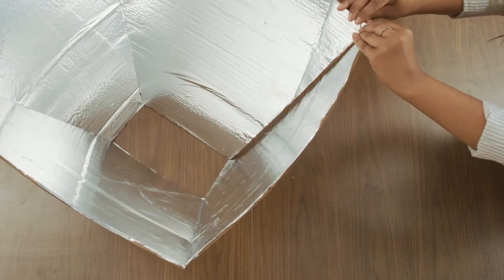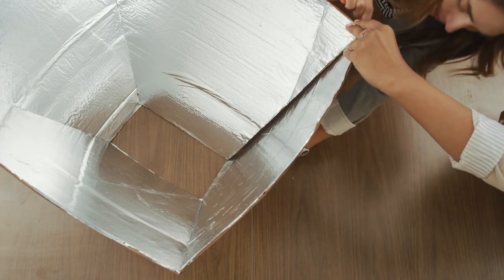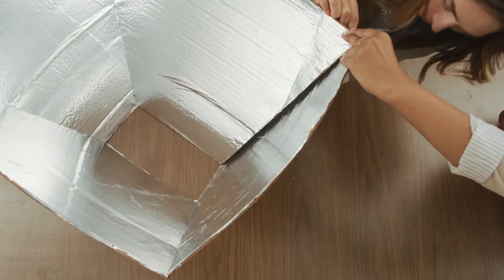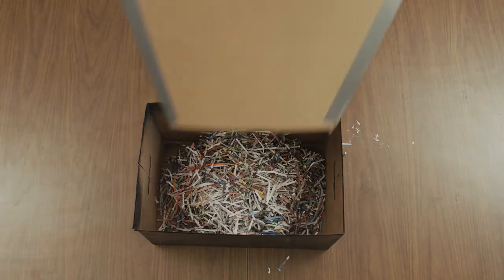Stand your reflector up, foil side in, bringing the edges of the outer two panels together. Have your partner hold the reflector in position while you add the last piece of duct tape. Add the insulated box.